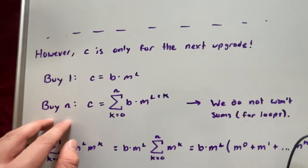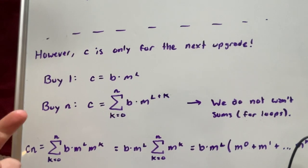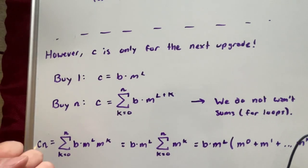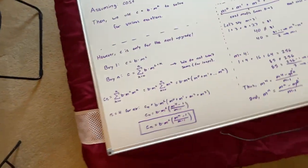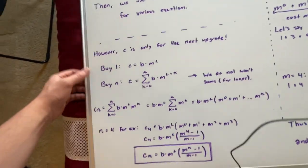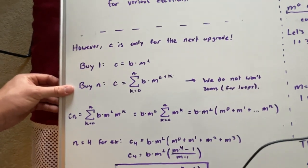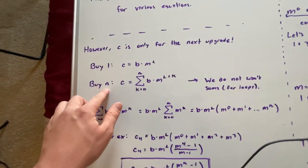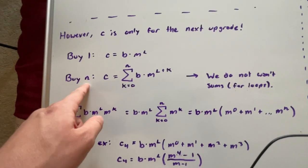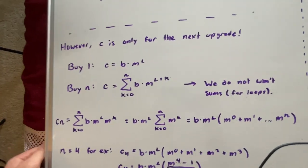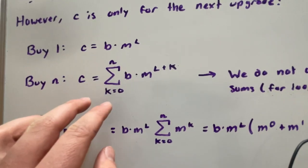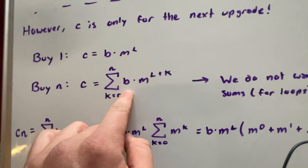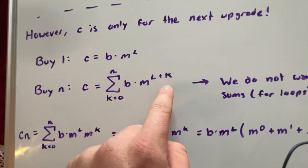However, if we were to buy n amount of upgrades, so let's say we're buying two, three, four, a hundred or so on, then our equation is going to be equal to the sum of b times m to the power of l plus k.